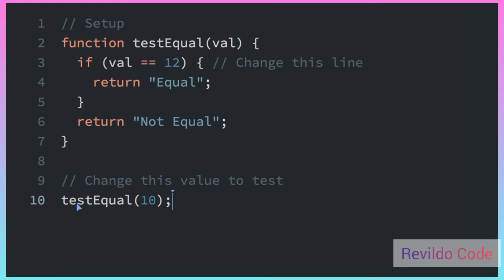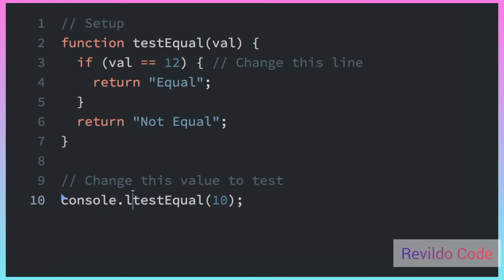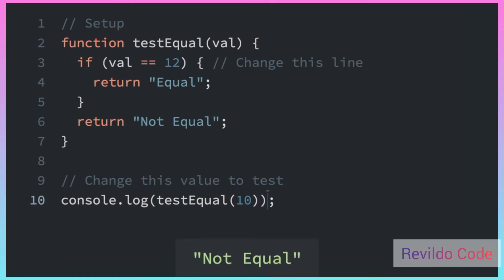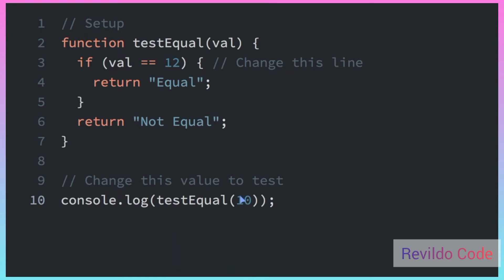So now this testEqual function is going to test to see if the number we pass in is equal to 12. I can do a console.log here, and we can see what appears in the console — it says 'not equal' because 10 does not equal 12.